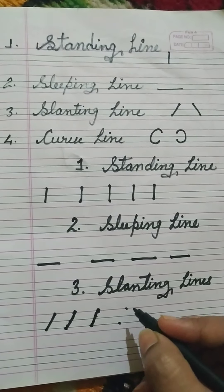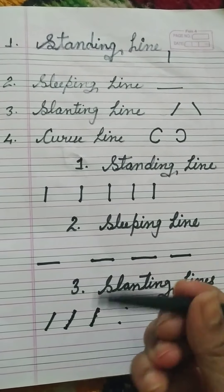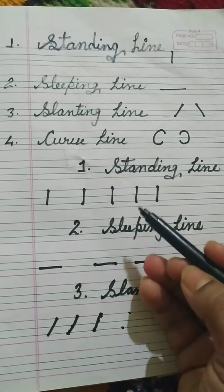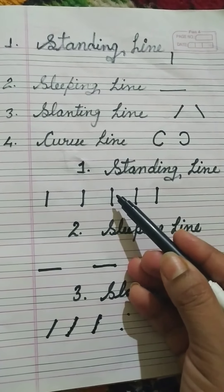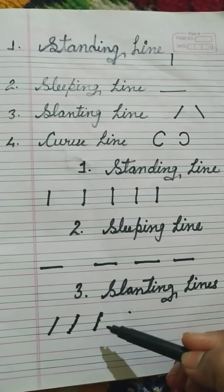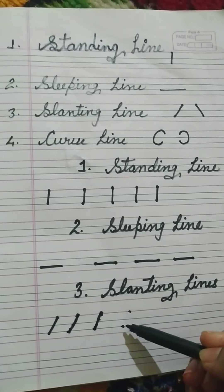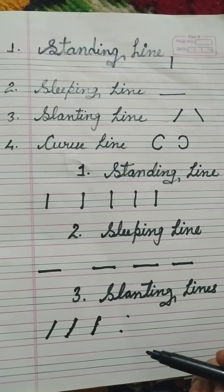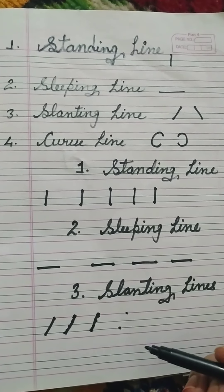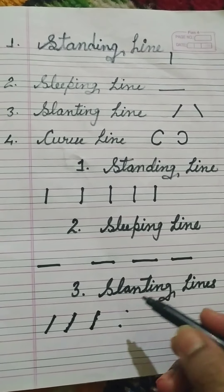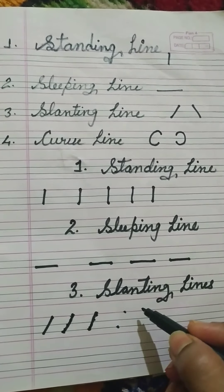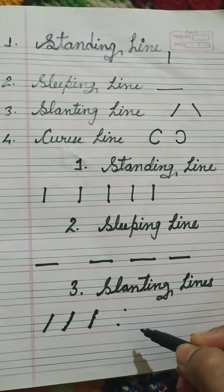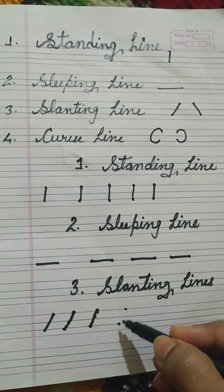Like the standing line, this is a straight line. But slanting line means it is a tilted line — thodi si tirchi line hoti hai. The standing line is completely straight, while the slanting line is slightly tilted.